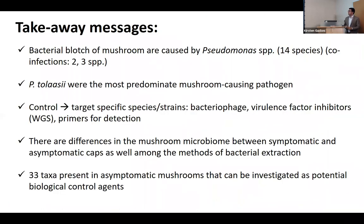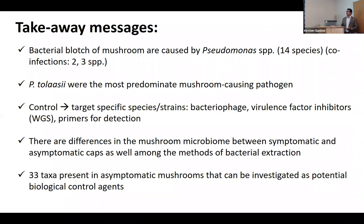The takeaway message is that bacterial blotch is caused by different species of Pseudomonas. In our survey study we found 14 different species, and sometimes two or even three species co-infect the same mushroom. Pseudomonas tolasei was the most dominant mushroom-causing pathogen. With this information, we can control specific species or strains using bacteriophages and virulence factor analysis from whole genome sequencing, and use that information to design specific primers for detection. There are microbiome differences in mushrooms regarding health status and extraction method, allowing us to identify 33 taxa as potential targets for beneficial microbial biocontrol agents.